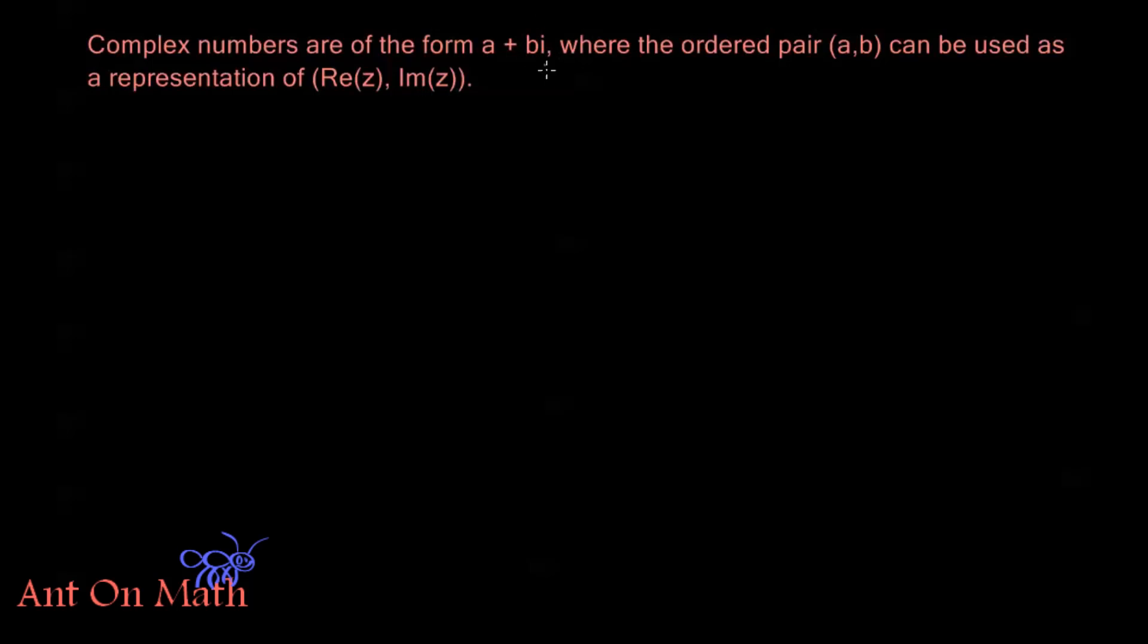Now we can use the ordered pair (A,B) as a representation of exactly that idea that I was just mentioning. We have a real part of the complex number and we have an imaginary part of the complex number.